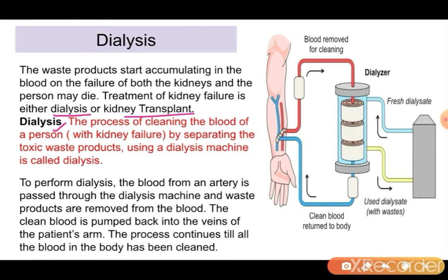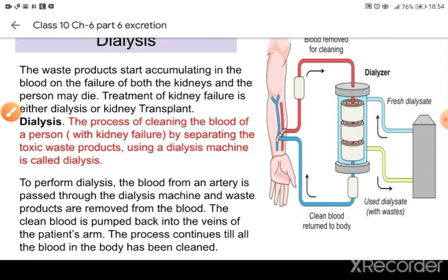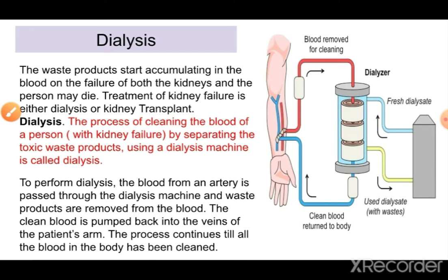In this situation the person either has to go for dialysis or for a kidney transplant. Dialysis is a process in which the cleaning of blood takes place by a dialysis machine. By this machine the person's blood is filtered — the artery is connected with the dialysis machine, the blood is filtered, and the clean blood is passed back into the veins. The disadvantage of this process is that the person has to go for it twice or thrice a week, and it is very costly.